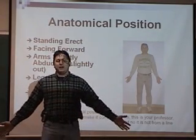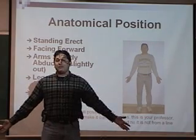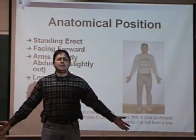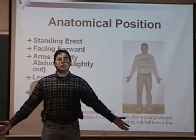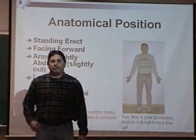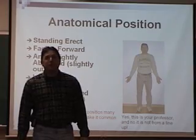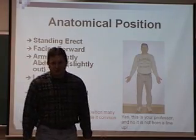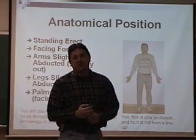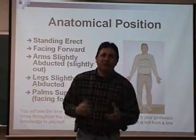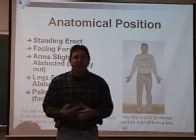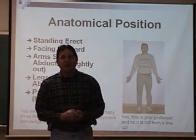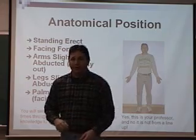Arms slightly abducted, slightly apart. Palms facing forward, what we call supinated, facing forward. Looking forward, head square on shoulders. This is anatomical position. Try it a couple of times. Put yourself in this position. Put somebody else in this position — put your spouse, a friend, anyone in this position — and say the terms out loud. Make sure you have them down very well before going on.